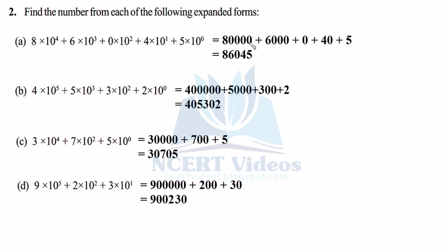So 8 followed by 4 zeros gives 80,000. Plus 6 into 10 raised to power 3 gives 6,000. Anything multiplied with 0 gives 0. Then 4 into 10 is 40. Now 10 raised to power 0 — any number except 0 raised to power 0 gives you 1 — so 5 into 1 is 5. When you add them up, count digit by digit: units digit is 5, tens digit is 4, hundreds is 0, thousands is 6, ten-thousands is 8. So 86,045 is your answer for part (a).